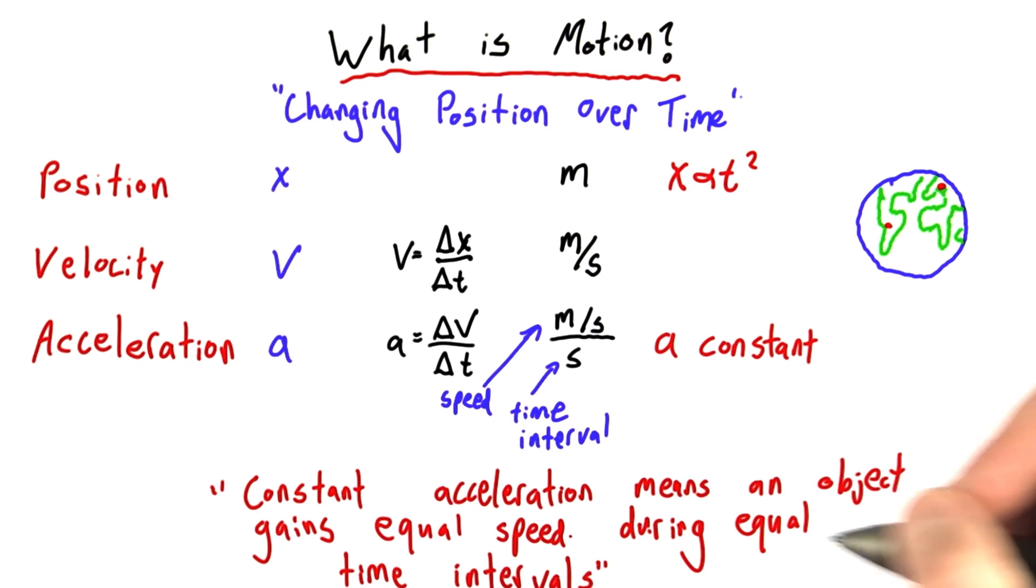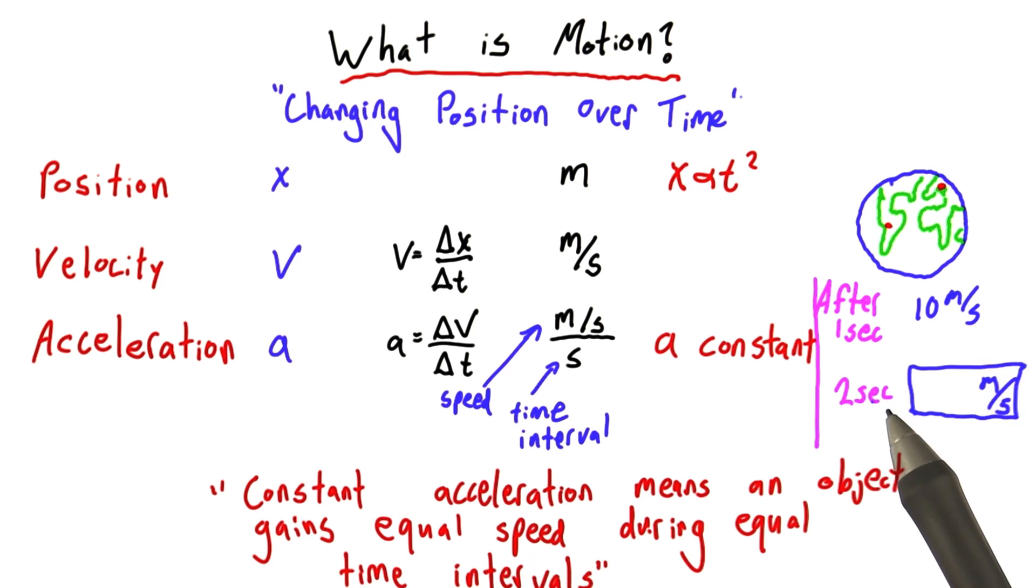So if we drop an object and it starts at rest and after one second, it has a speed of ten meters per second, meaning that it's gained ten meters per second of speed in that first second, what will its speed be after two seconds? And this can be a subtle point, so don't worry if you don't get it right on your first try.